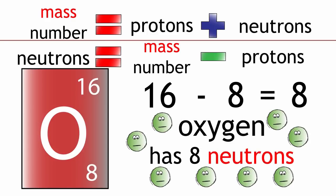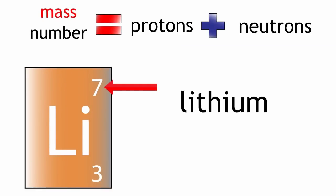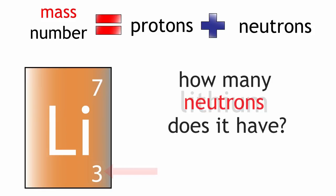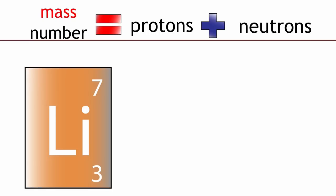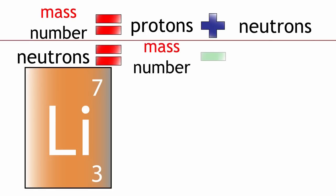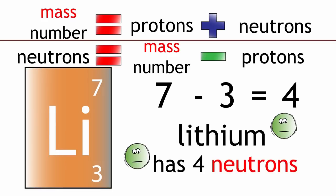Let's take another example. Lithium has a mass number of 7 and has 3 protons. We can rearrange this to show that neutrons equals mass number minus protons. Neutrons equals 7 minus 3 equals 4. Lithium therefore has 4 neutrons.